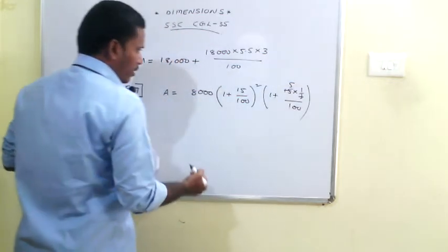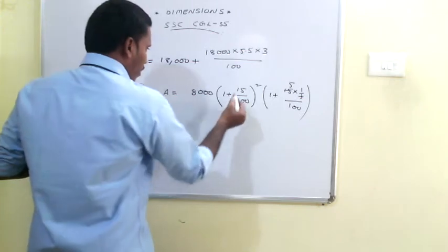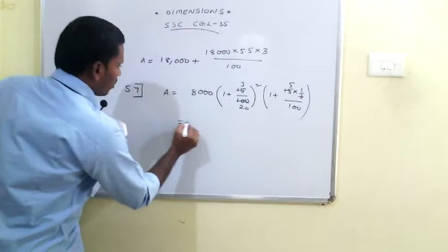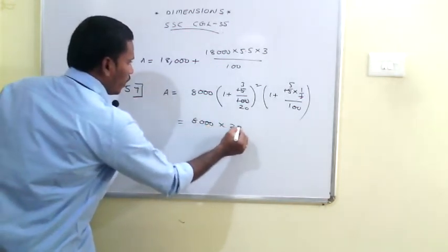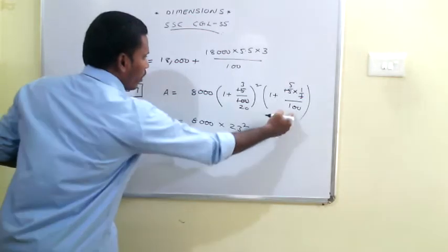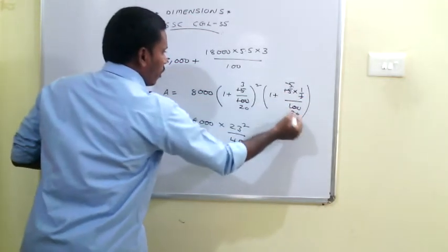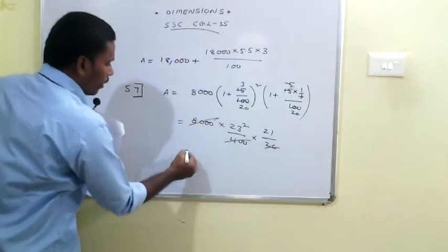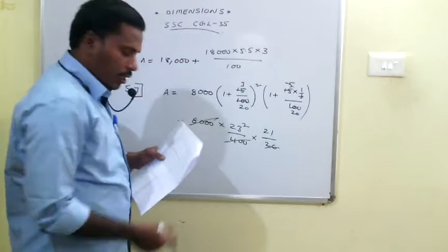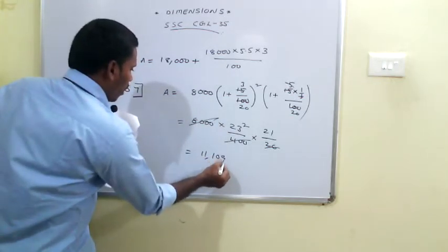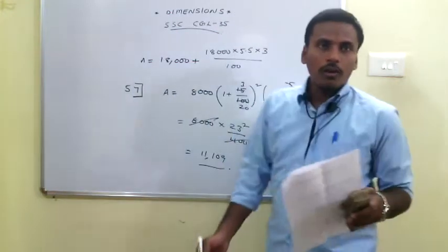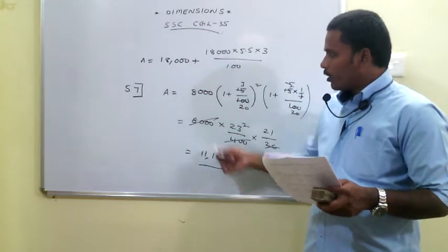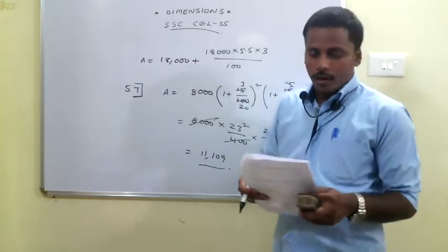Simplifying: the amount equals 8,000 × (23/20)² × (21/20). Since 400 × 20 = 8,000, we multiply 23² × 21, which equals 11,109. So the amount is 11,109 rupees. The compound interest is the difference between the amount and the principal: 11,109 − 8,000 = 3,109. Your answer is 3,109.